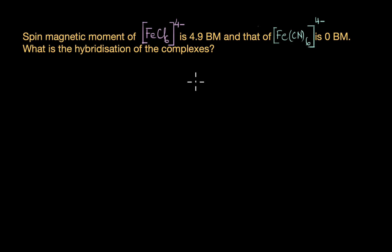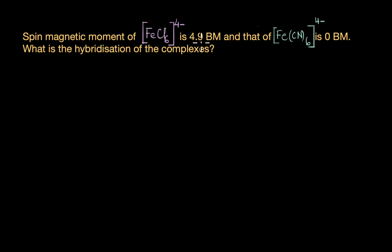By now you are all familiar with VB theory and how it tries to explain bonding in coordination compounds. In this video, let's solve a couple of questions based on the same. The first question states that the spin magnetic moment of FeCl₆⁴⁻ is 4.9 Bohr magneton and that of FeCN₆⁴⁻ is 0 Bohr magneton. Based on these magnetic moments we can figure out the hybridization and geometry of these complexes.